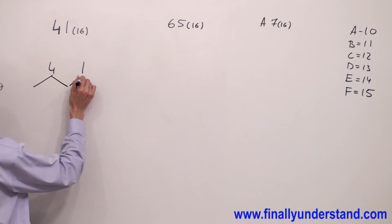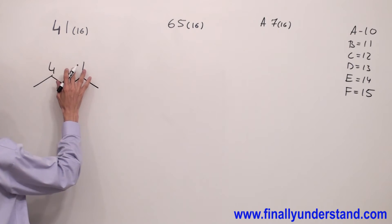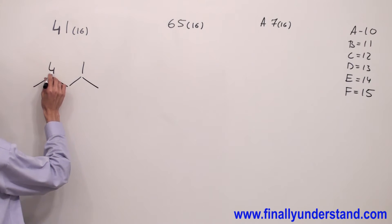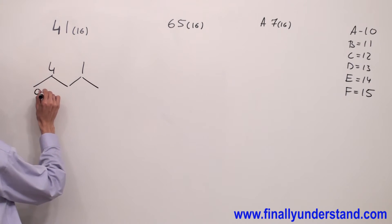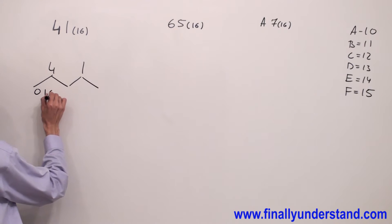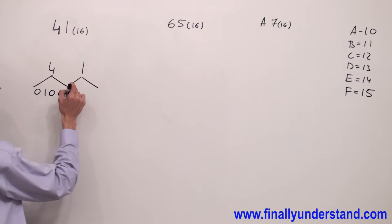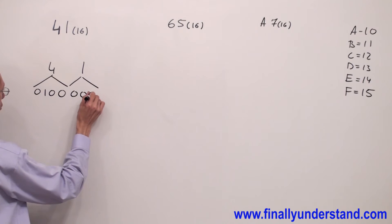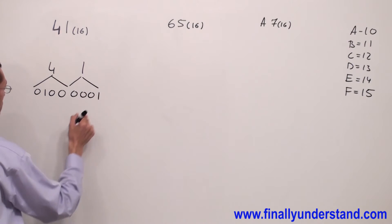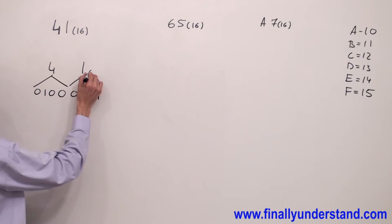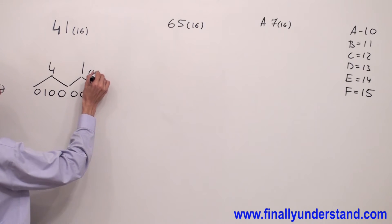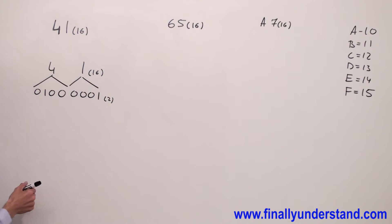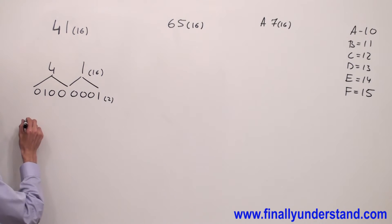So 4 in binary is 0100, and 1 in binary is 0001. So if 41 is your hexadecimal number (base 16), then 01000001 is your binary number. Let me explain why we have 0100 and 0001.